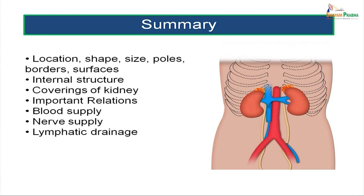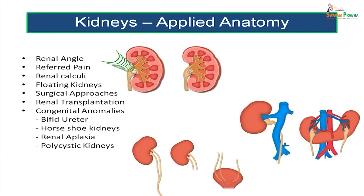We now come to the applied anatomy part of the kidneys. We will be studying the renal angle, renal pain, renal calculi, the anatomical basis of floating kidneys, the various surgical approaches, aspects of renal transplantation, and some common congenital anomalies including bifid ureter, horseshoe-shaped kidneys, renal aplasia, and polycystic kidneys.